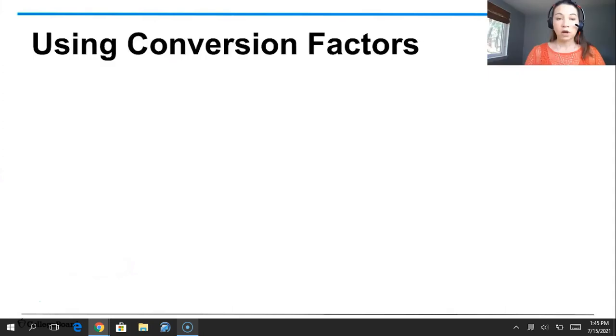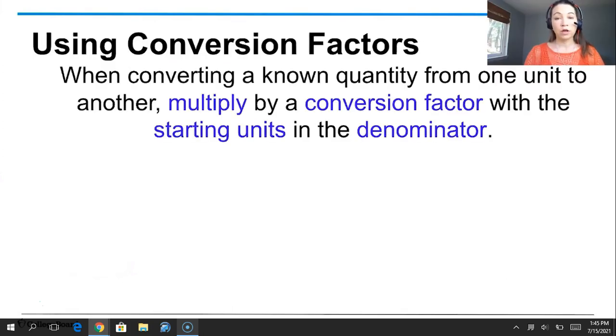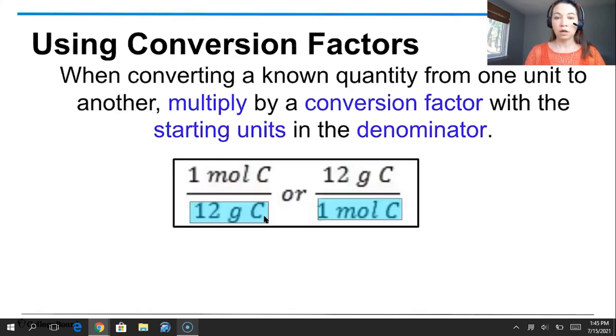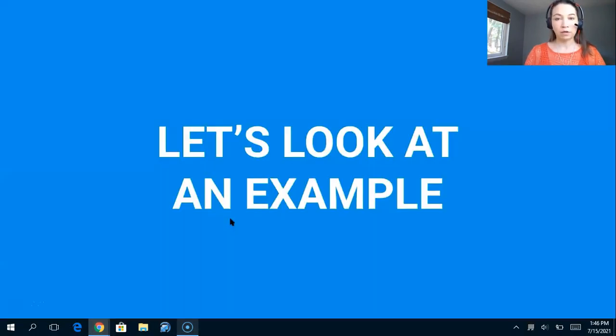So how do you use them? Well, this is important. When you're converting a known quantity from one unit to another, you're going to multiply that known quantity by a conversion factor that has the starting units of the known quantity in the denominator. So here's the denominator, right? And you want the starting units to be in the denominator of your conversion factor. So let's look at an example of that.